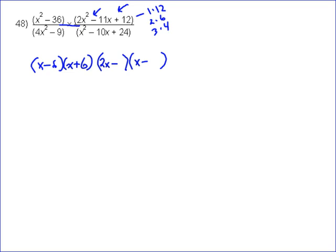I need to get negative 11x. If I put the 3 and the 4 in — so for instance, if I put a 3 here and a 4 here — that's going to give me negative 3x and then negative 8x, which added together gives me negative 11x. So I made a good guess to start with. If that wouldn't have worked, I would have switched the 3 and the 4, and then maybe tried the 2 and the 6 or the 1 and the 12.